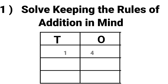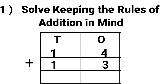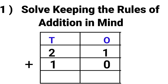14 plus 13. We are keeping the rules of addition in mind. 4 in the mind, 3 in the fingers. 4 after 5, 6, 7. So the answer is 7. And 1 plus 1 is equal to 2.